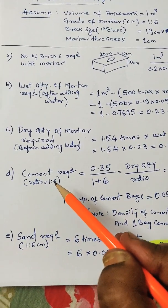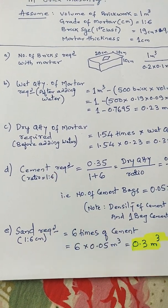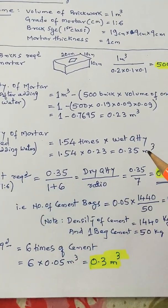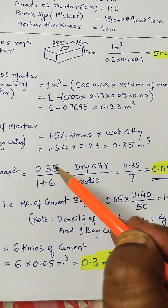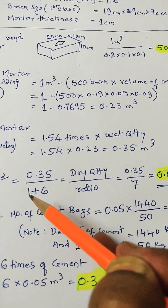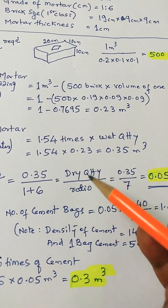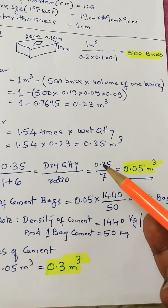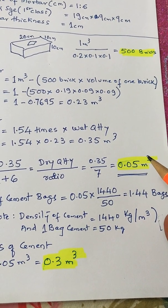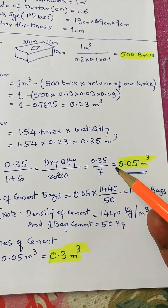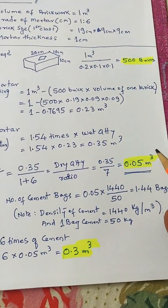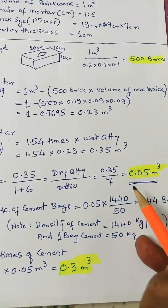So in mortar there are two components. One is cement and another is sand. So cement in the ratio of 1 is to 6. So 0.35 is the dry quantity required. Then ratio is 0.35 divided by 7. It gives 0.05 meter cube. So this is the quantity of cement required. 0.05 meter cube.